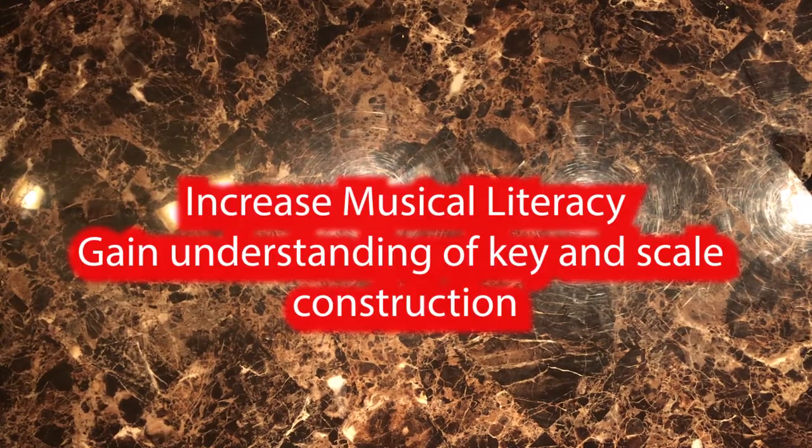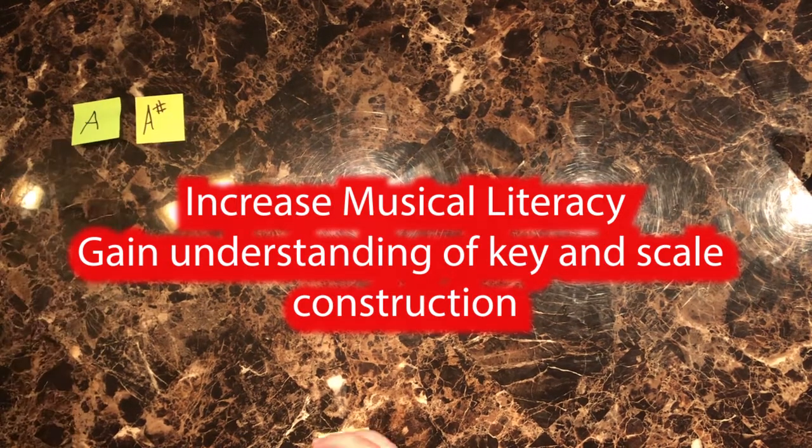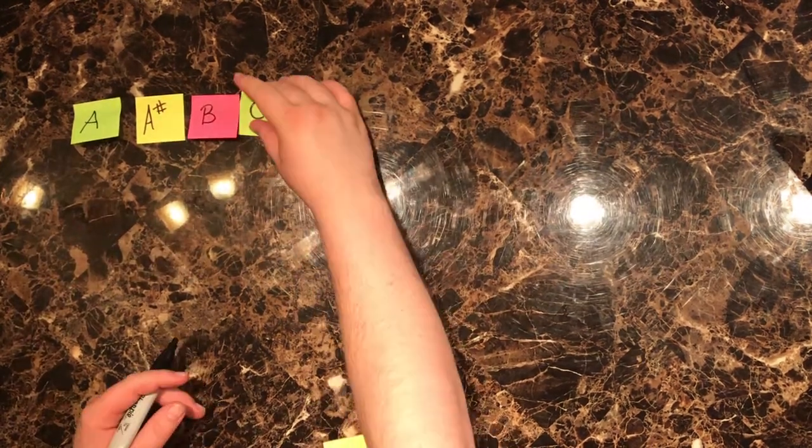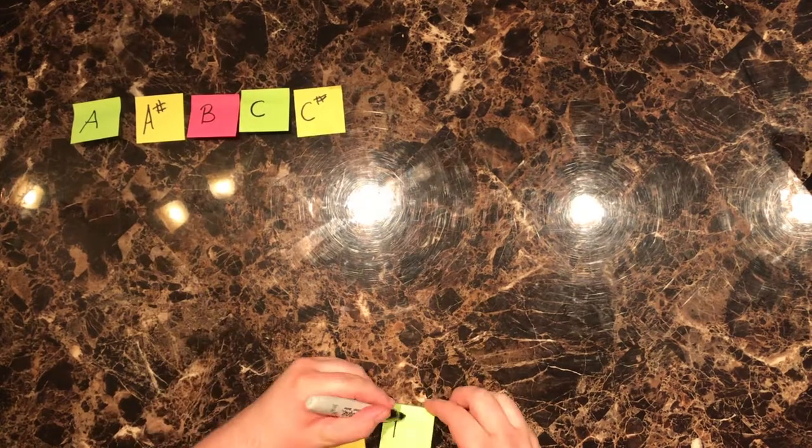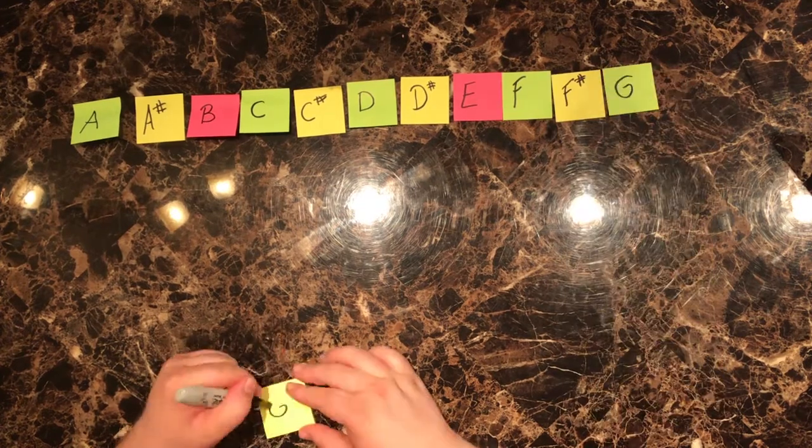Hello everyone. Today's lesson is Keys and Scales. In this lesson we are looking to increase our musical literacy and give us the first set of tools to understanding how keys and scales work. Our musical world is made up of 12 unique notes that are one half step away from each other. A half step is the distance between one fret on the guitar or one key on the piano. In this video, it's going to be an adjacent sticky note.